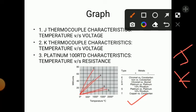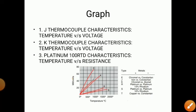To plot the graph, take temperature in degrees Celsius on the x-axis and millivolts on the y-axis. The J type and K type characteristics are almost linear. K type is very linear, while J type is slightly non-linear. We should obtain such graphs when plotting on graph paper.